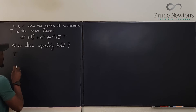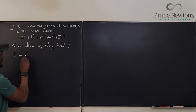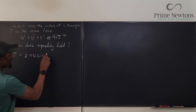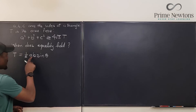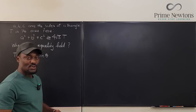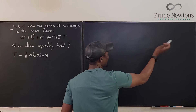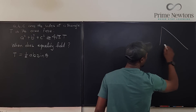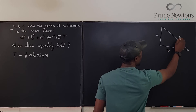Let's say T is equal to one half AB sine theta, where theta is the angle between the two sides AB. There's a third side C. Let me make a sketch of a triangle. So we have this — let's call this A, call this B, call this C.